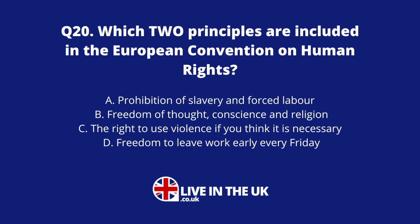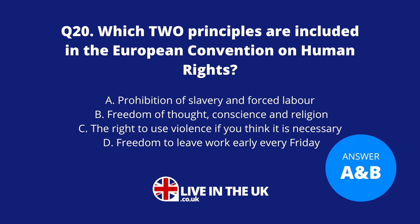Question twenty: Which two principles are included in the European Convention on Human Rights? A. The prohibition of slavery and forced labour. B. Freedom of thought, conscience and religion. C. Freedom to leave work early every Friday. The answers are A and B — the prohibition of slavery and forced labour, and freedom of thought, conscience and religion.